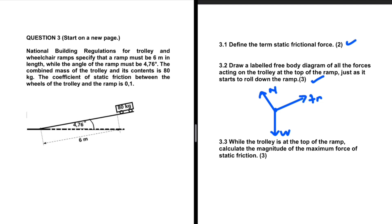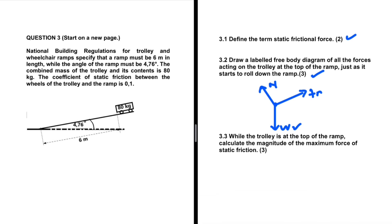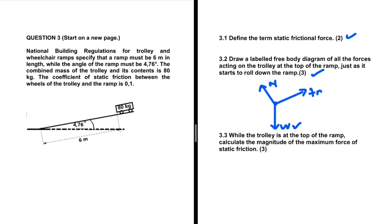We have the weight, the normal force, and the frictional force pointing up the incline. Why is the frictional force pointing up the incline? The normal force is perpendicular to the surface, so it plays no role in the parallel motion of the object relative to the surface. What plays a role is the weight. We can resolve the weight into its parallel component and its perpendicular component. The weight parallel is down the incline, so the trolley will be moving down the incline because of that force — that is why the frictional force is up the incline.